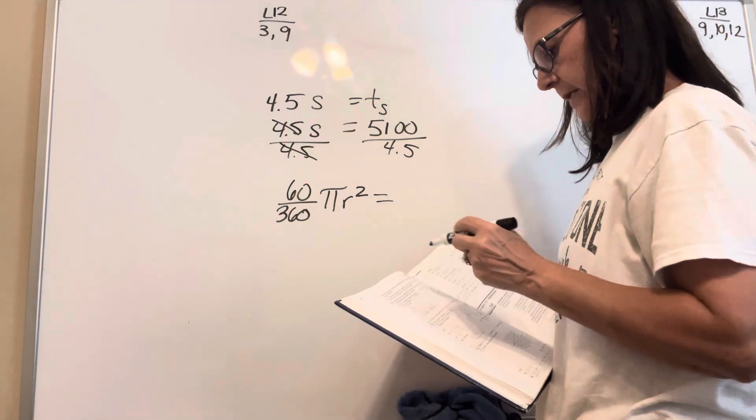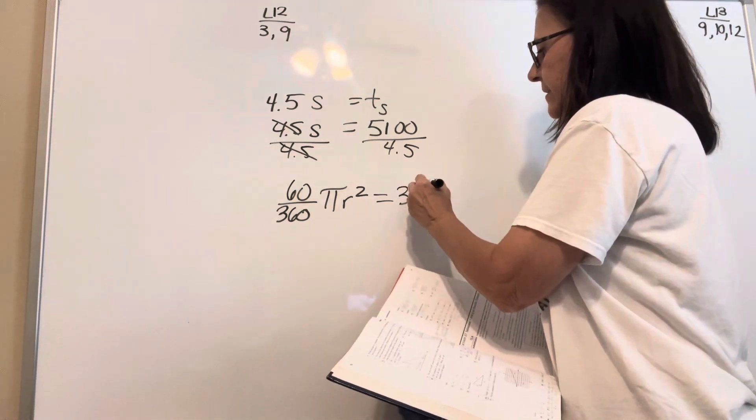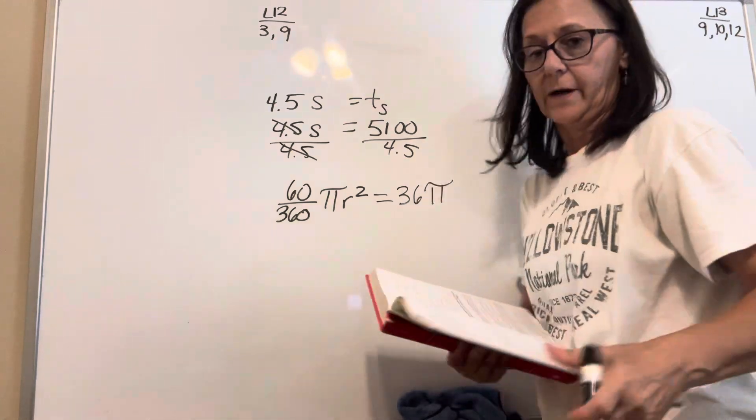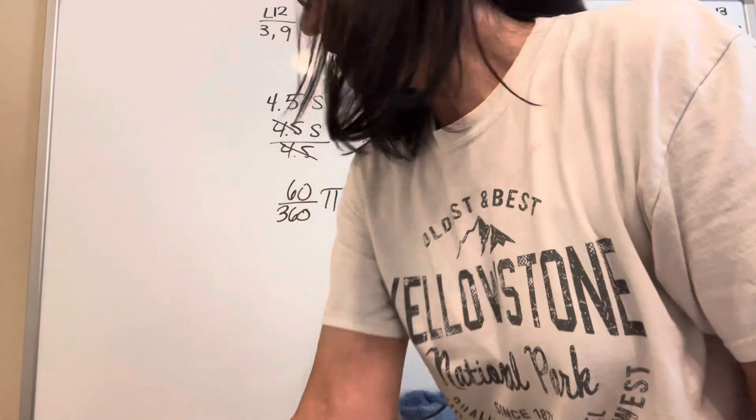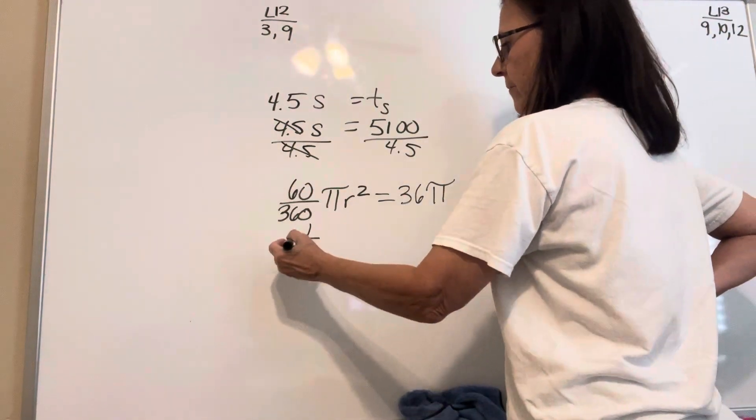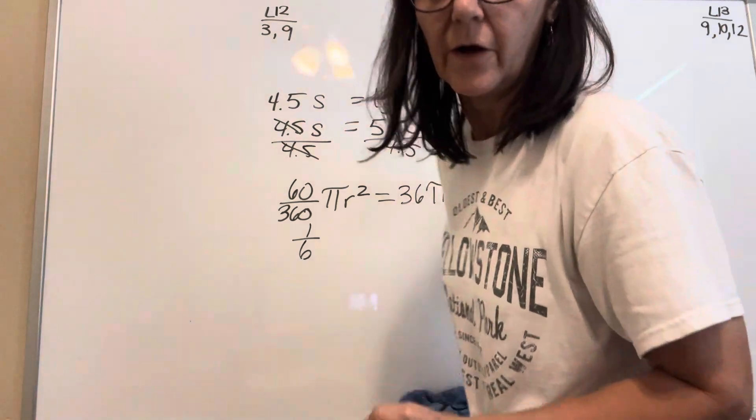Is 36 pi, 36 pi centimeters squared. All right, this is 1 sixth. Let me write this as 1 sixth. It probably wants to know what's the radius.